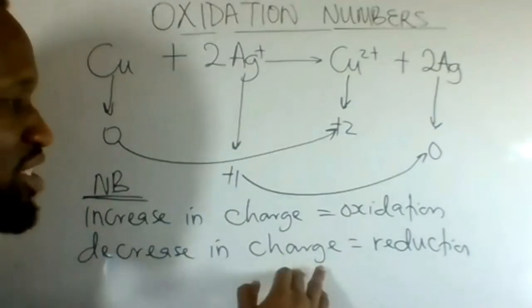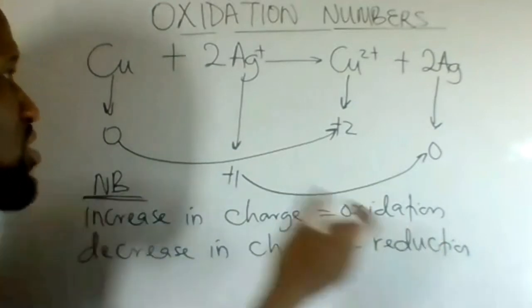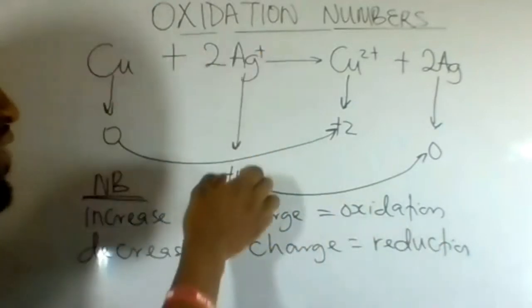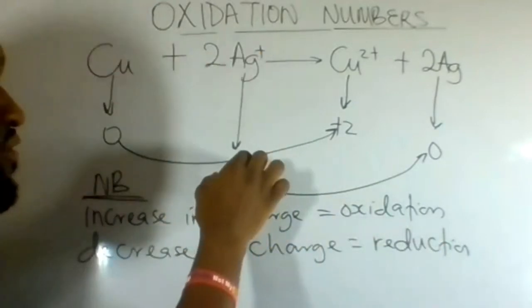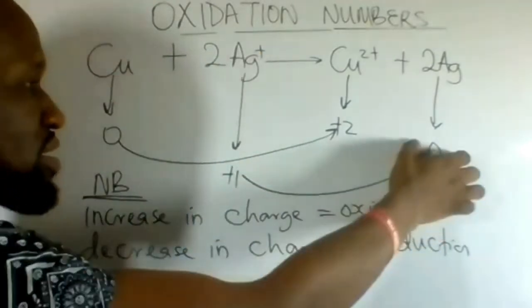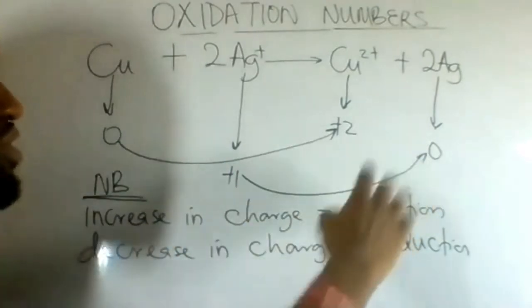A decrease in charge is reduction. Silver decreased from plus one to zero — that is reduction.